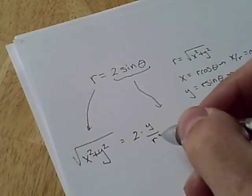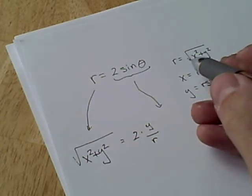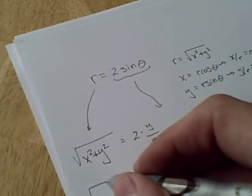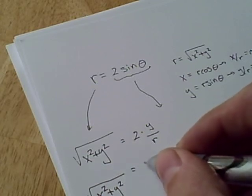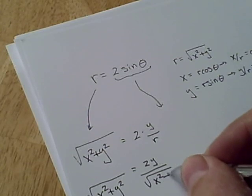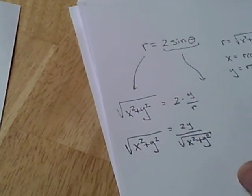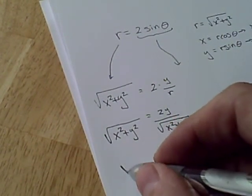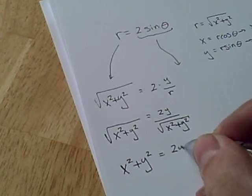Now, it might seem odd that r appears again. That's fine, though. We know how r is related to x and y, and so we continue to substitute until we don't have the r anymore. This is 2y over the square root. Okay? So now if we multiply both sides, we get x squared plus y squared equals 2y.